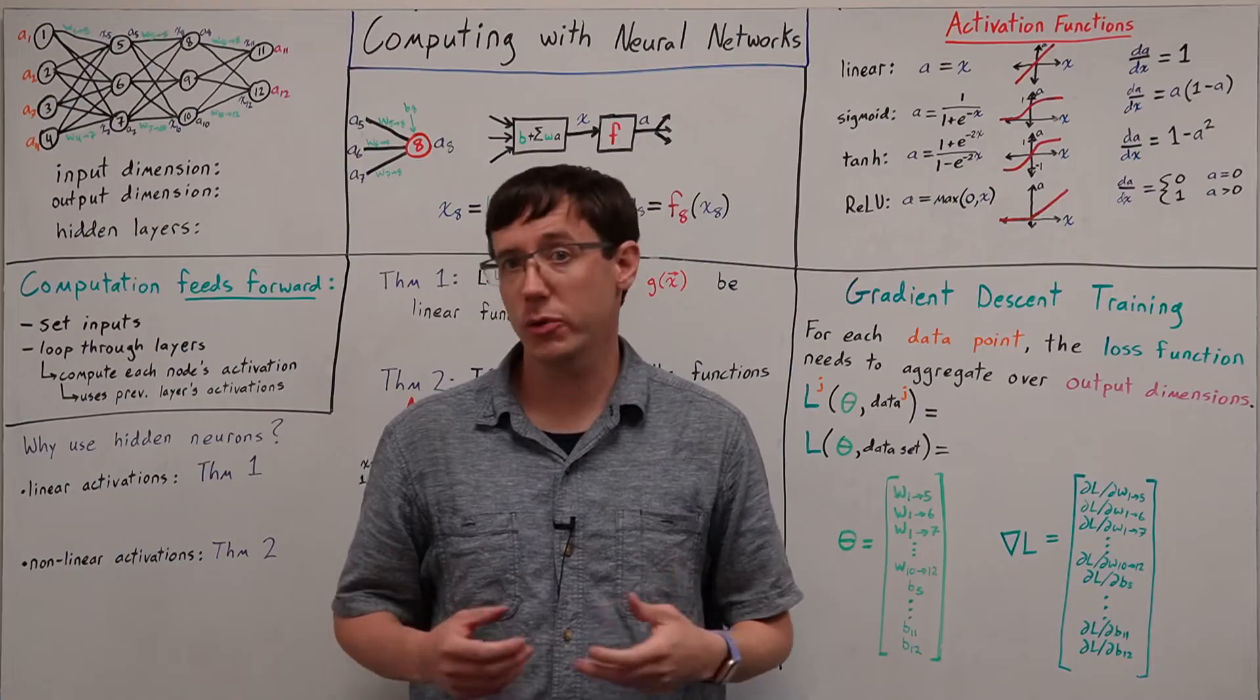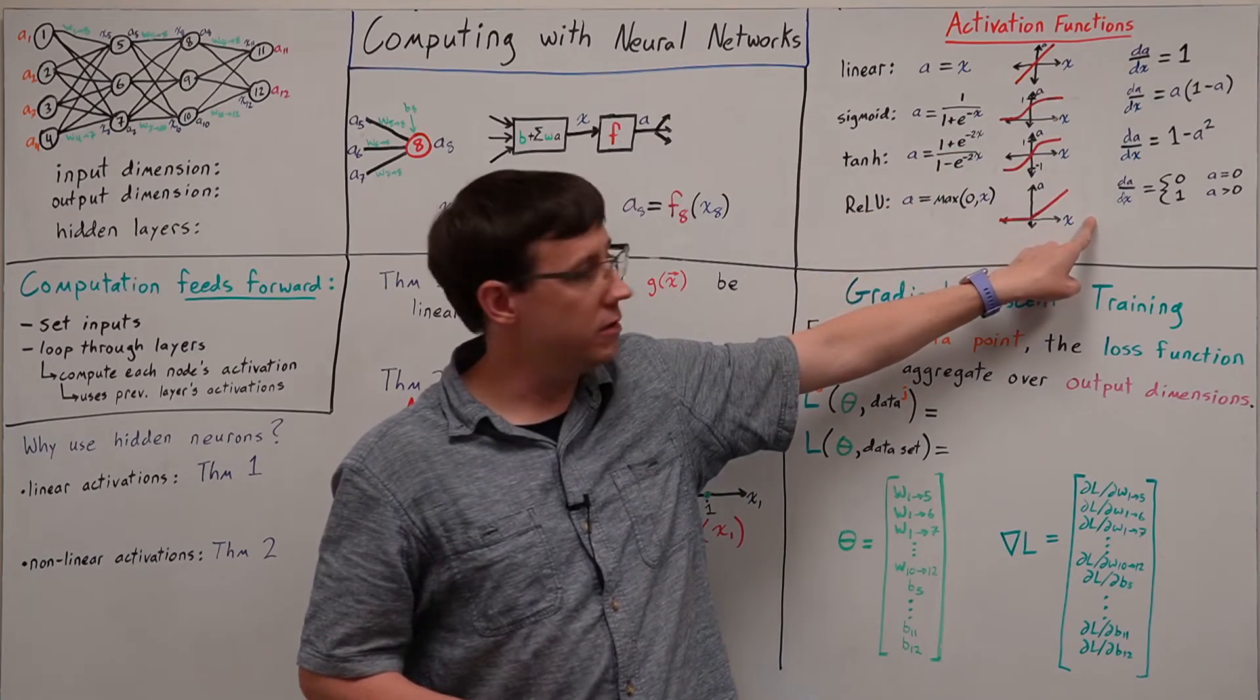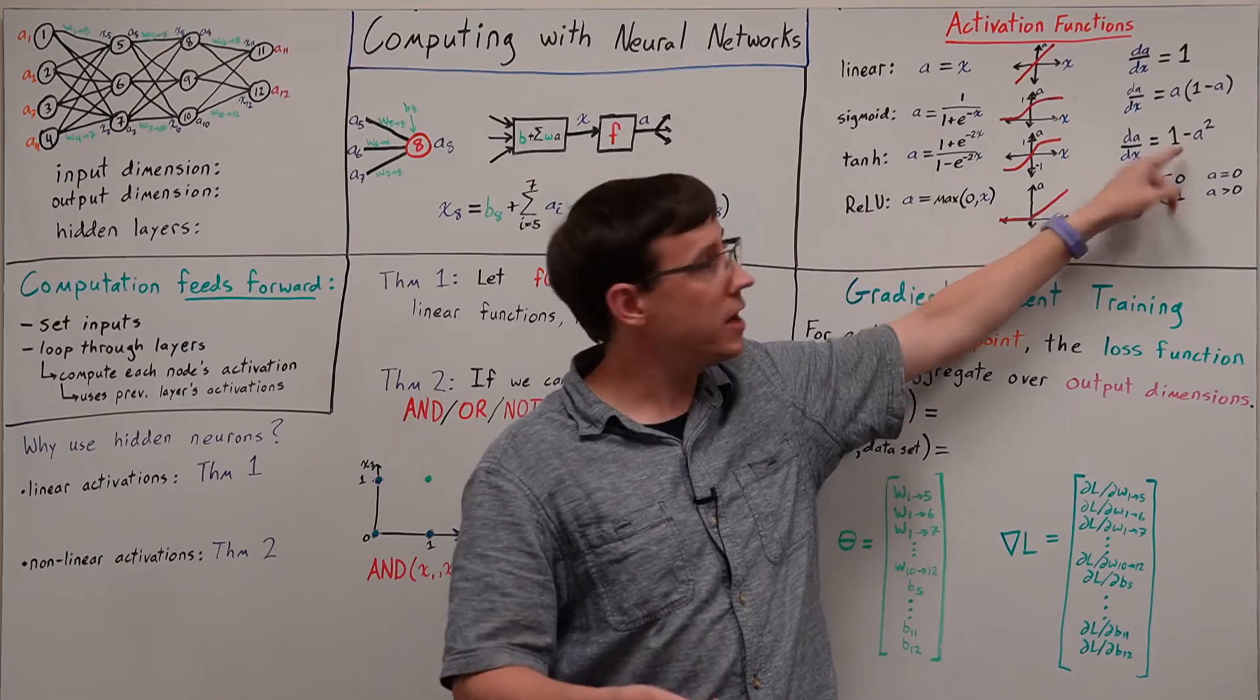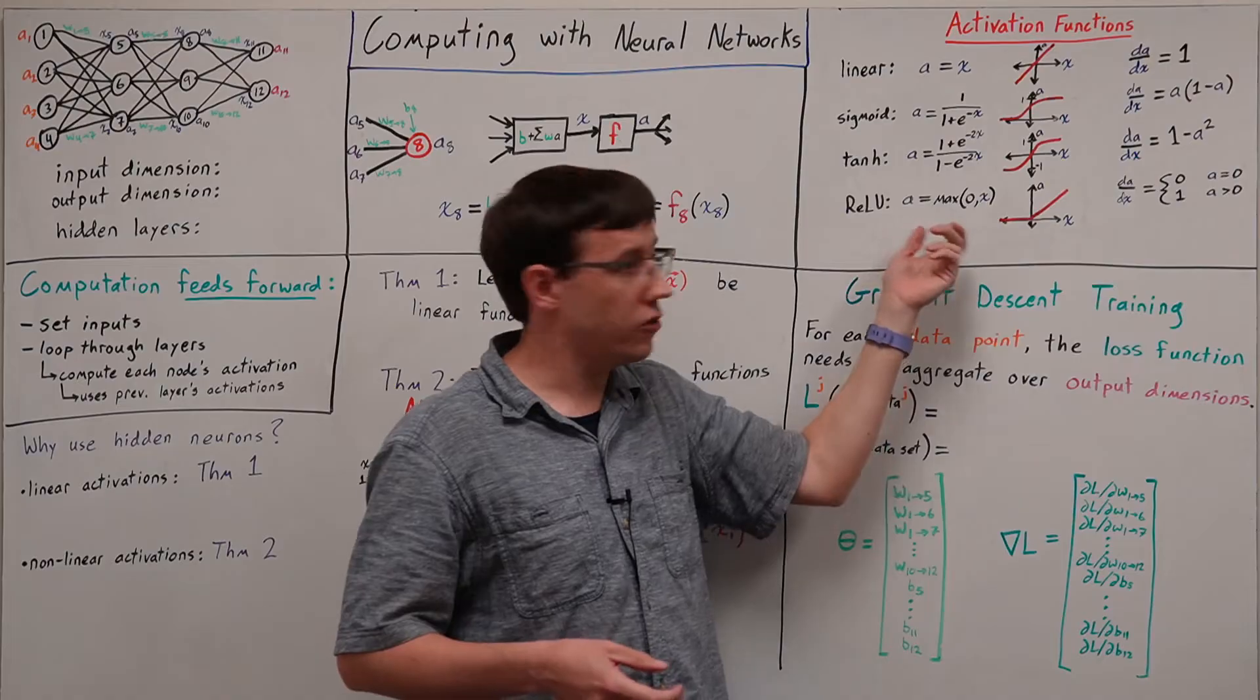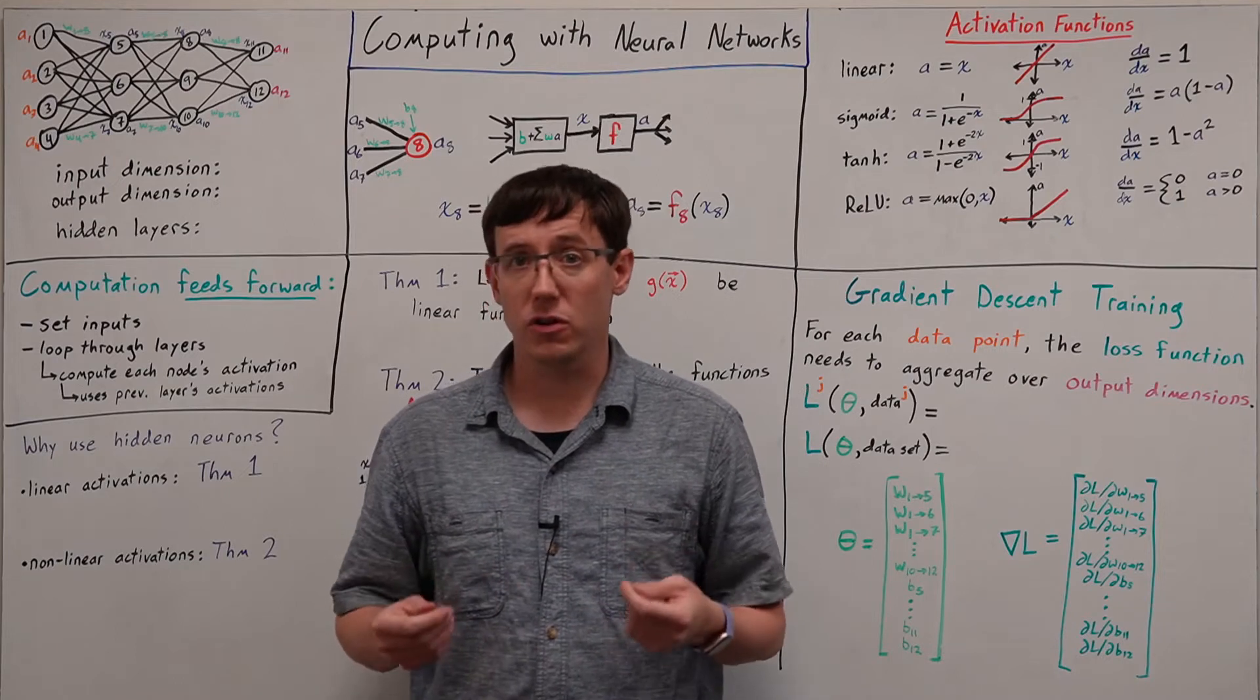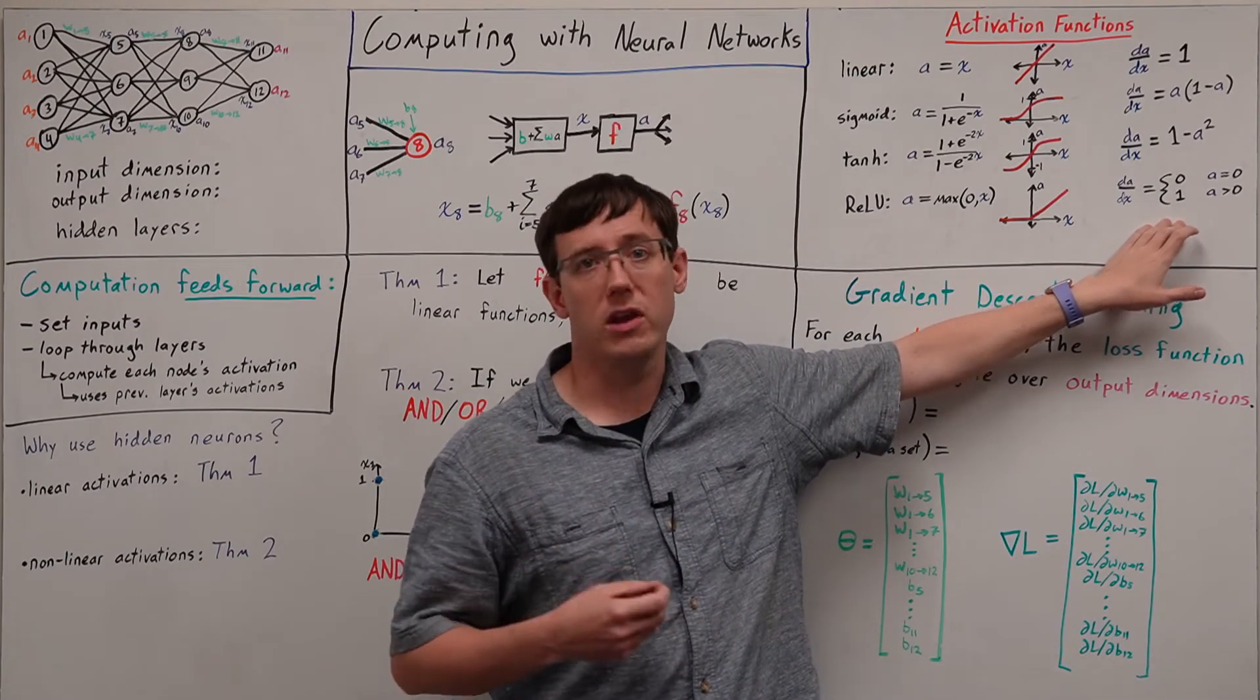And because we will eventually be training our neural networks with gradient descent, we need to know the derivative of each of these activation functions. And for each of these functions, I've formulated the derivative in terms of the activation that the function outputs. We could also write down the derivative in terms of the input, but as we'll see when we derive gradient descent, we'll need to be storing the activations anyway. And so if we can formulate the derivative in terms of those stored activations, we can make our computations easier.